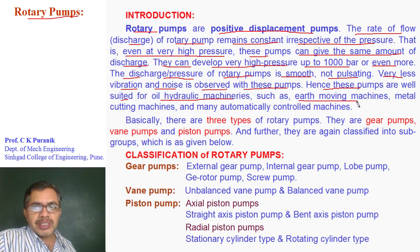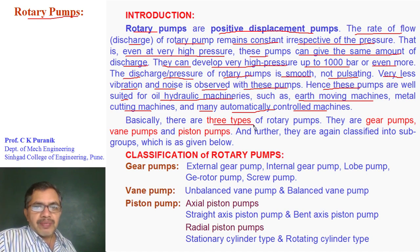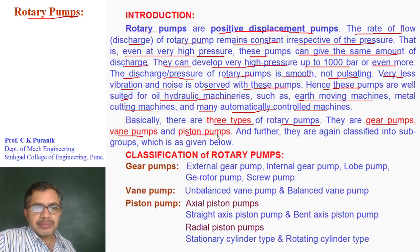Very less vibration and noise is observed with these pumps. Hence these pumps are well suited for hydraulic systems such as earth moving machines, metal cutting machines, and many automatically controlled machines. There are three types of rotary pumps: gear pump, vane pump, and piston pump.